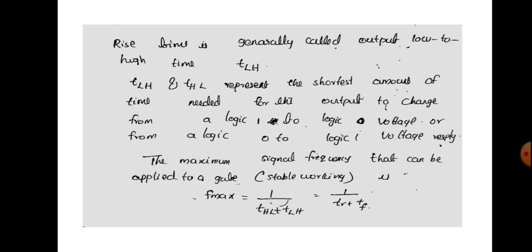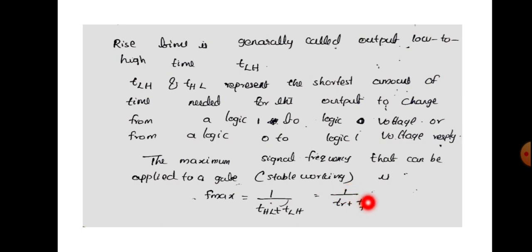The maximum signal frequency that can be applied to a MOSFET for stable working is given by F_max equal to 1 divided by (T_HL plus T_LH), where T_HL is the high-to-low fall time T_F, and T_LH is the low-to-high rise time T_R. So F_max equals 1 divided by (T_R plus T_F).